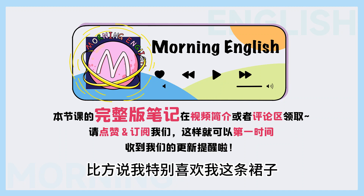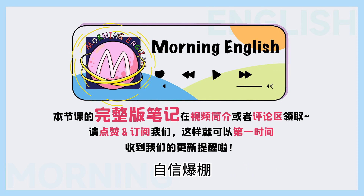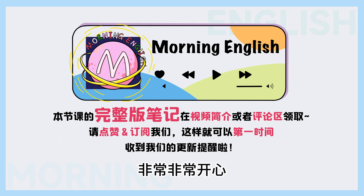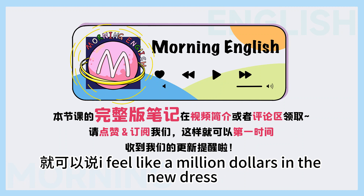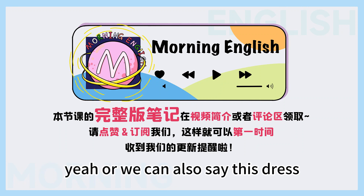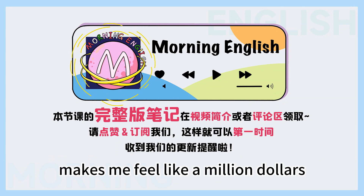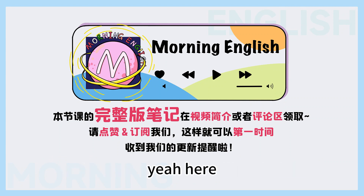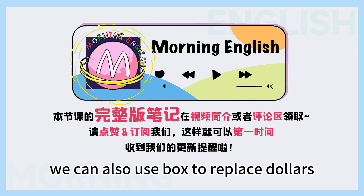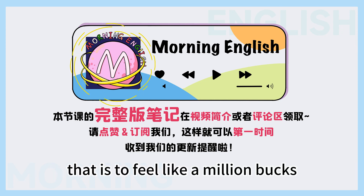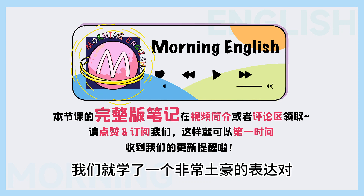比方說我特別喜歡我這條裙子，穿上它感覺自信爆棚，就可以說 I feel like a million dollars in the new dress. Or we can also say, this dress makes me feel like a million dollars. Here we can also use bucks to replace dollars — that is, to feel like a million bucks.